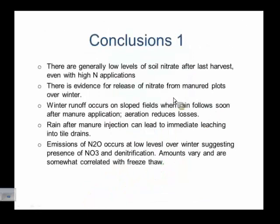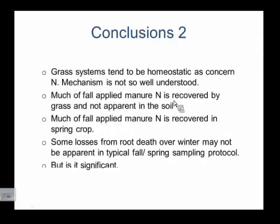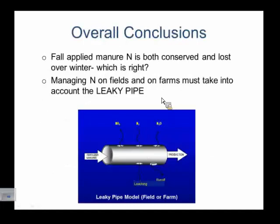A lot of this data is on FarmWest. Recovery of nitrogen measured in the next year shows 50 to 60 kilograms of nitrogen applied in the fall could be accounted for in the roots and shoots of the grass. There's also a dip due to freezing, thawing, and dying of roots — some loss in winter that will be missed if you don't measure. Conclusions: yes, there is evidence that nitrate is released over wintertime and that needs to be taken into account. Nitrous oxide follows from that. Grass systems tend to be homeostatic, and to manage nitrogen, one needs to always go back to the leaky pipe model.